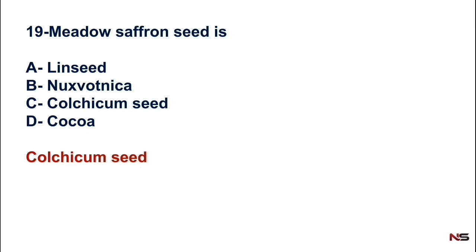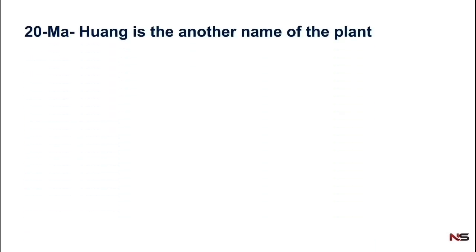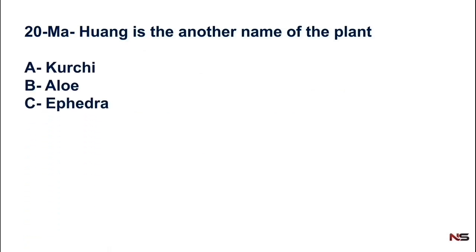Next question: Mahong is the other name of which plant? Options include Kurchi, Ephedra, and Cinchona. We already discussed this in the last question — the answer is option C, Ephedra.